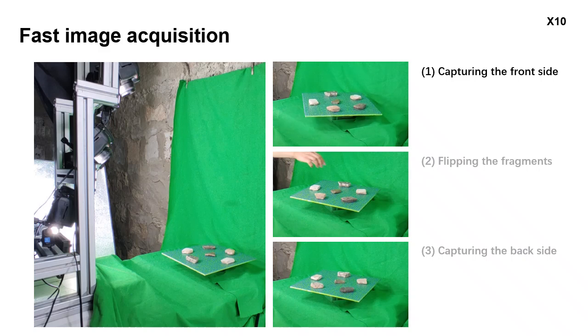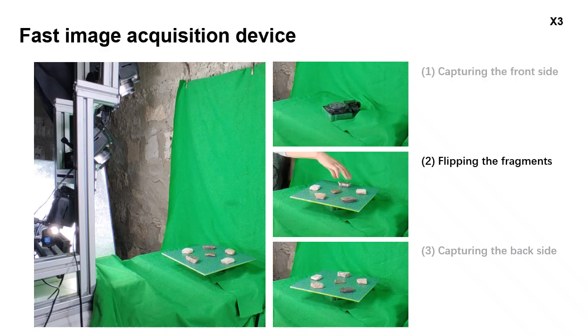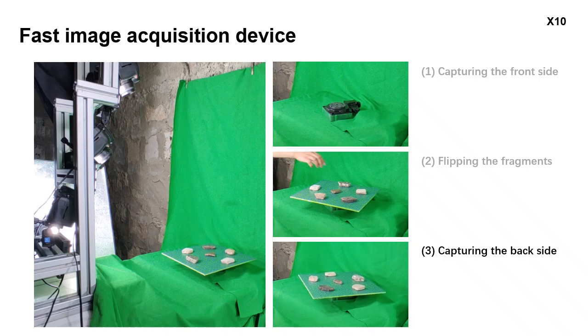Given a set of fragments, we will firstly capture a batch of images of the front side. After finishing the front side, we will manually flip the fragments. Then we will start to capture the back side.